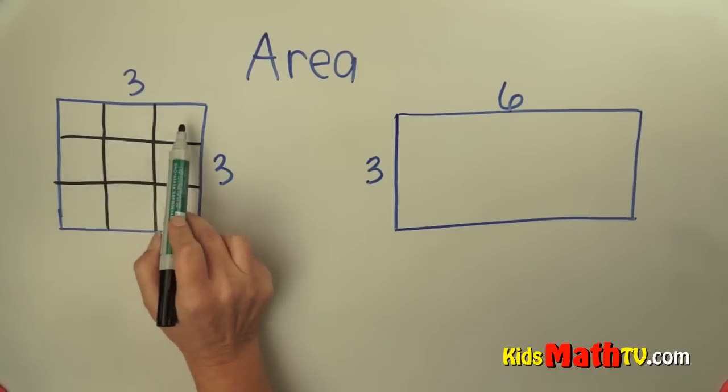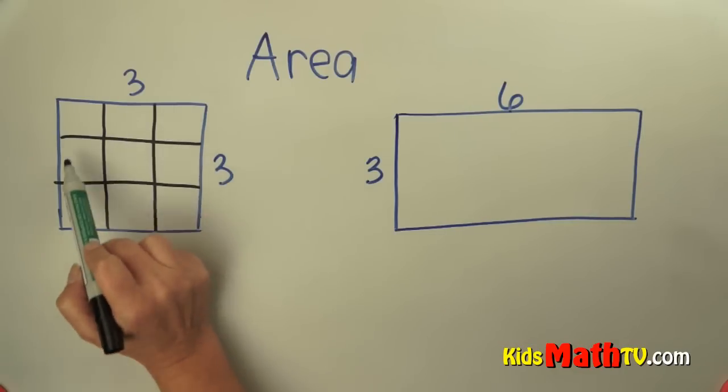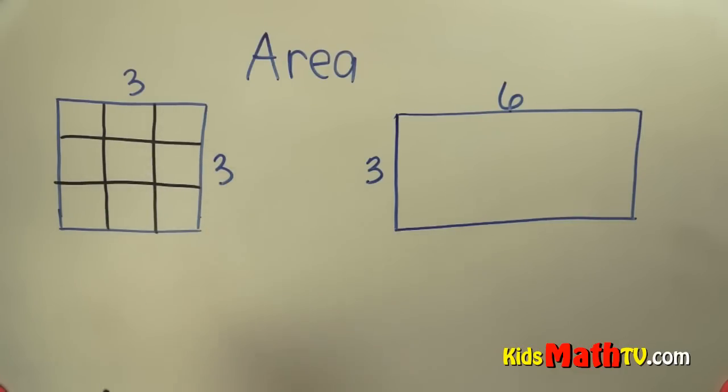And if I count them: one, two, three, four, five, six, seven, eight, nine. There are nine squares, or nine square units within that.